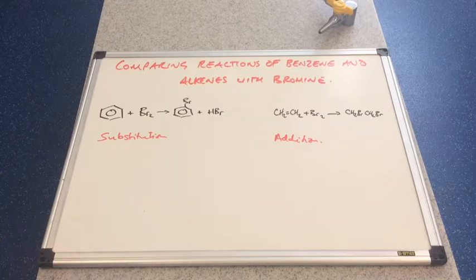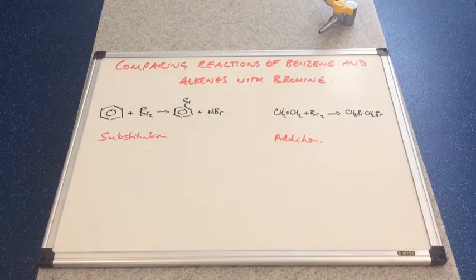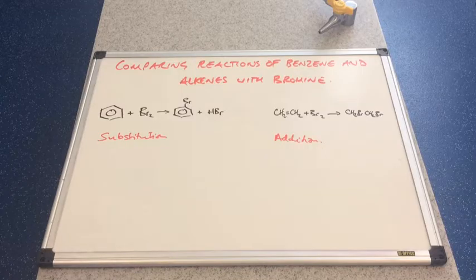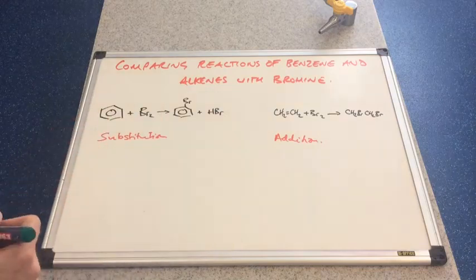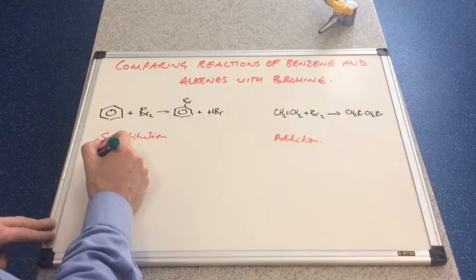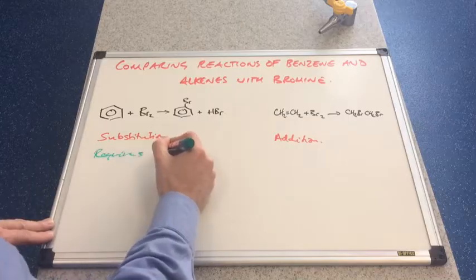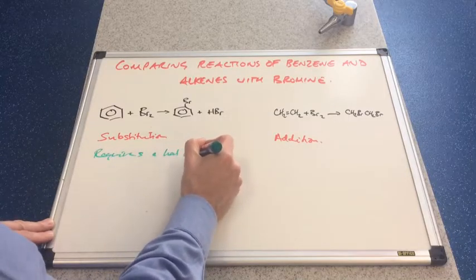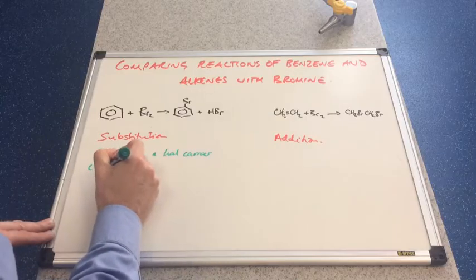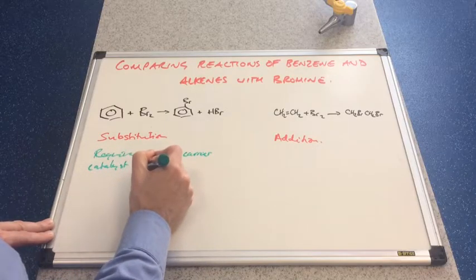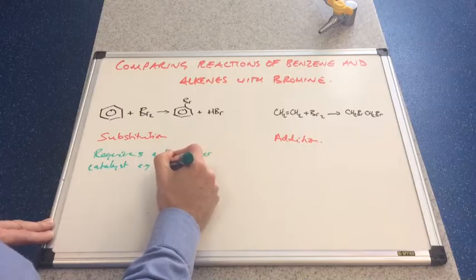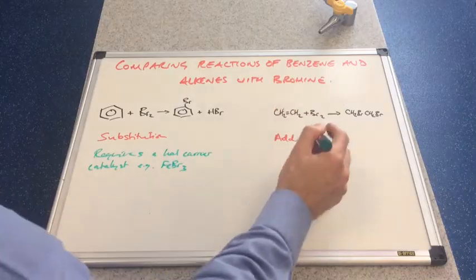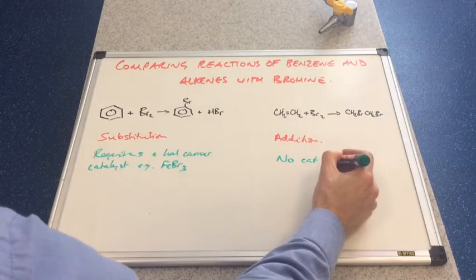The next thing to mention is, if we can remember from our benzene theory, that this reaction requires a catalyst. So it requires a halogen carrier catalyst, for example FeBr3. So this won't work without this catalyst. This one, no catalyst is needed.